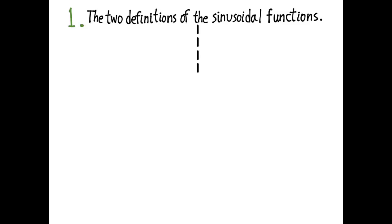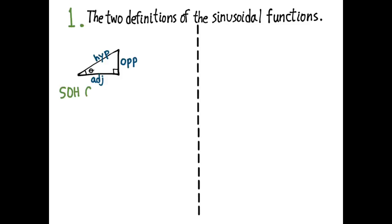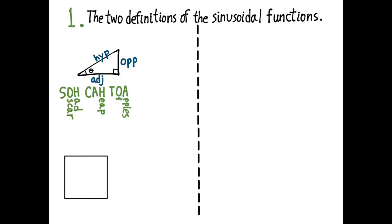We'll start with number one: the two definitions. First, triangle trigonometry — we have an opposite and adjacent leg and a hypotenuse. The mnemonic SOH CAH TOA, or if you prefer, 'OSCAR had a heap of apples,' tells you the definitions of the sine, cosine, and tangent function.